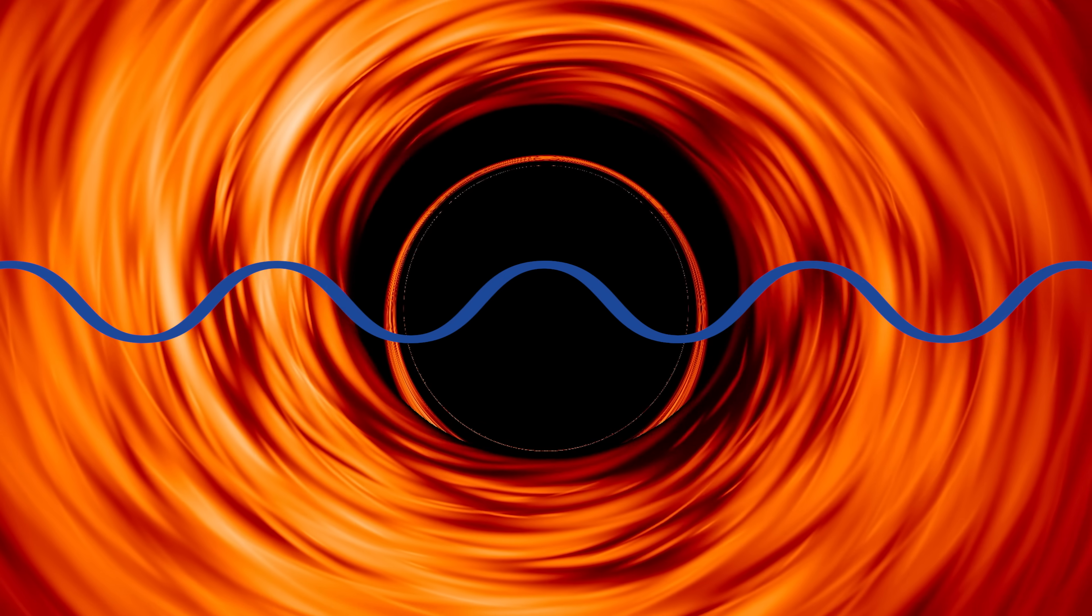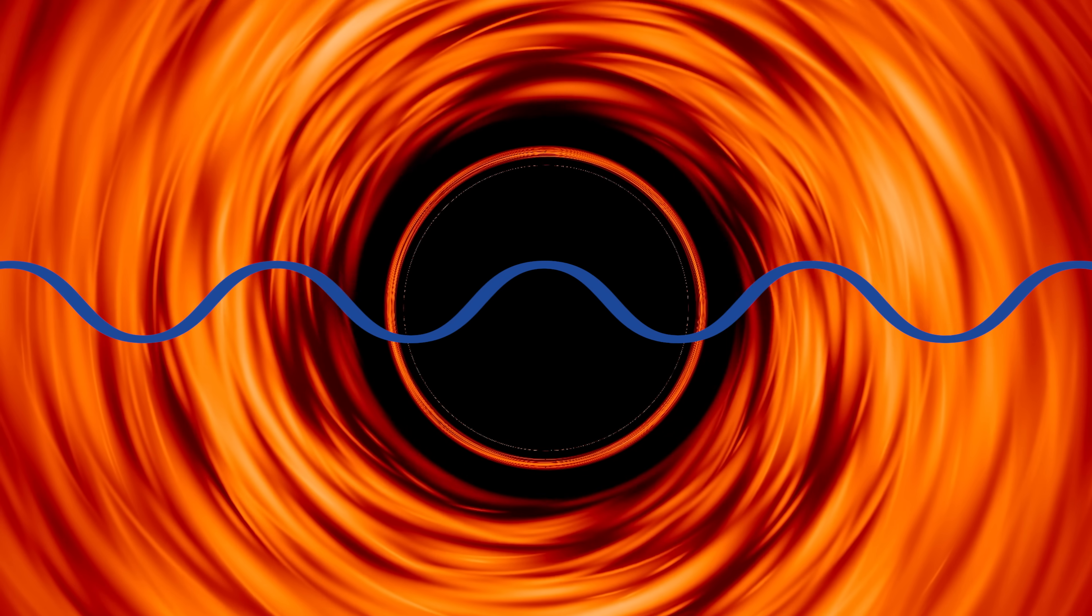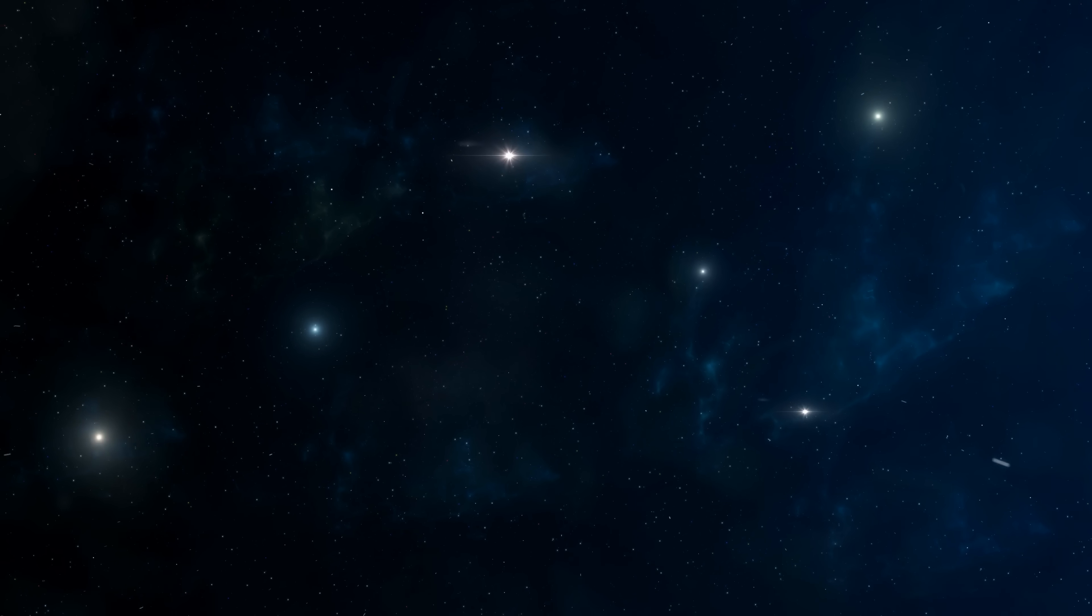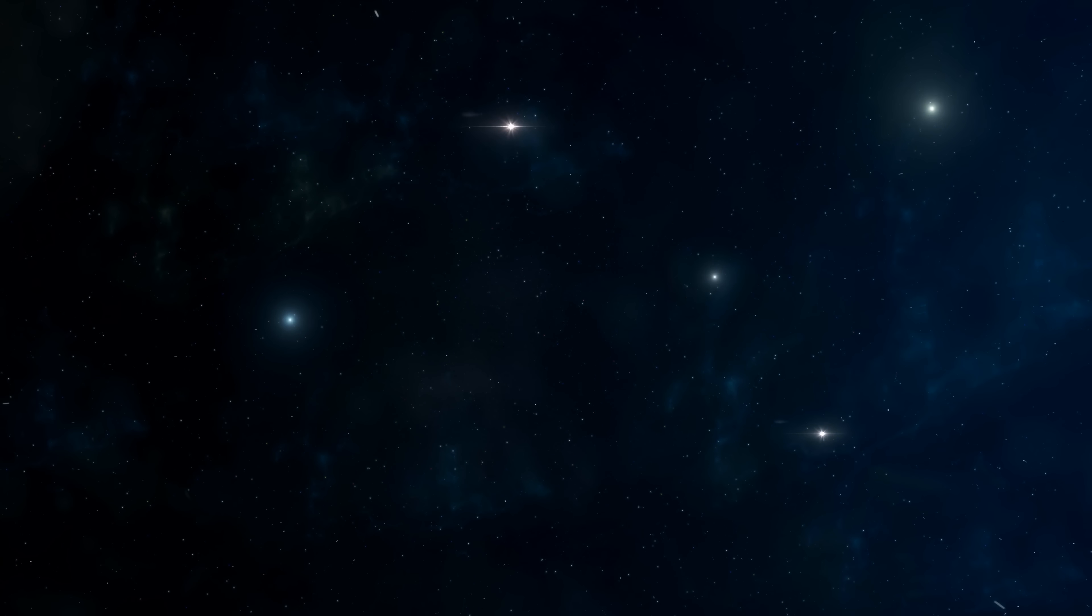As some black holes have event horizons the size of solar systems, we have no way of detecting this kind of radiation. We'd only really see it once the universe had gone cold and dead, so there was nothing else to get in the way, which would probably mean we weren't around anymore to do the detecting.